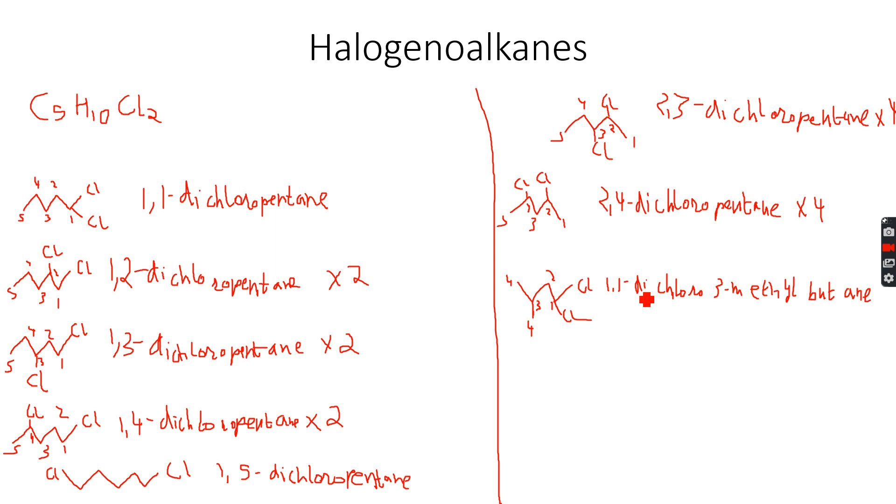So let's see how we derive the name for this isomer. It will be 1,1-dichloro because there are 2 chlorine atoms so dichloro and both of them are on the first carbon atom. And then 3-methyl because there is a methyl group on the third carbon atom and butane because the longest carbon chain has 4 carbon atoms in any case.